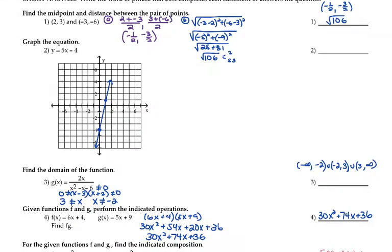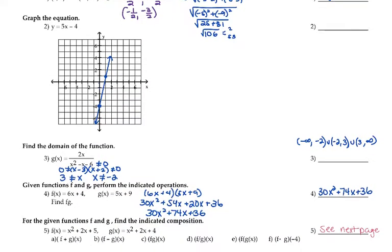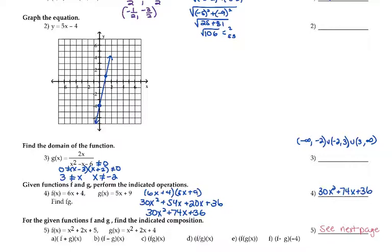Number 2 is the line. You just have to do y equals mx plus b. The funny thing about this question is it's probably one of the most missed questions on the graphs last year, because students got so focused on everything else they forgot how to graph a line. So negative 4 is where you start, then go up 5 and to the right 1, and plot your point. All the graphing is open-ended, no calculator.